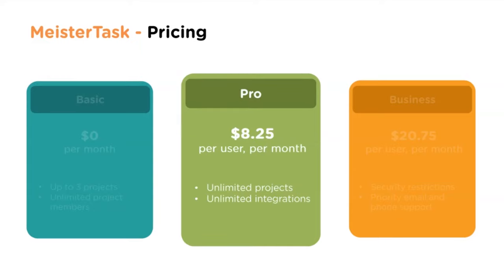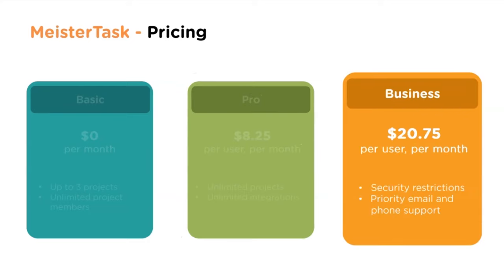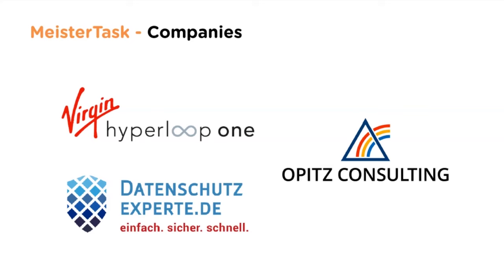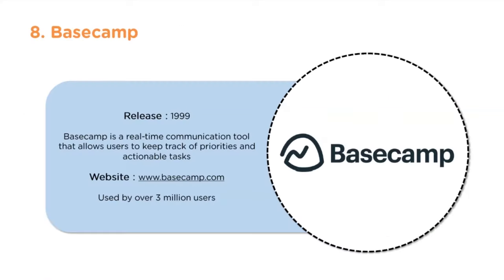MeisterTask Pro includes unlimited projects and unlimited integrations at $8.25 per user per month. The business version costs $20.75 per user per month and includes security restrictions plus priority email and phone support. Organizations using MeisterTask include Virgin, Optics Consulting, and Datansuquartz Expert.